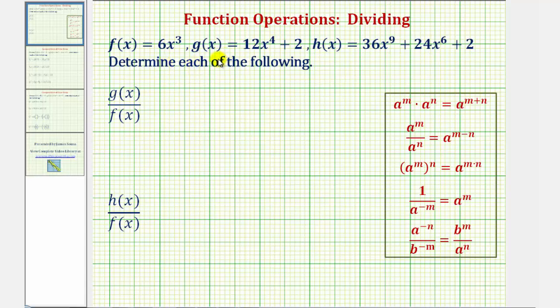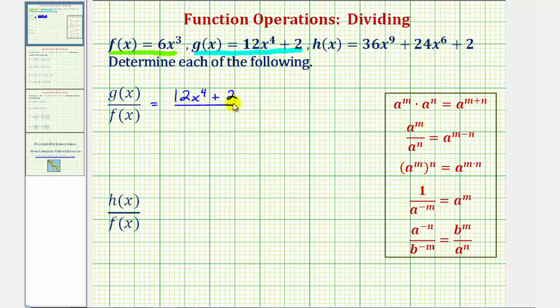We're given f of x, g of x, and h of x, and asked to find the following two quotients. We first have g of x divided by f of x, where g of x equals 12x to the fourth plus two, and f of x equals six x to the third. So our quotient would be 12x to the fourth plus two divided by six x to the third.